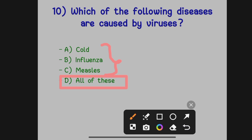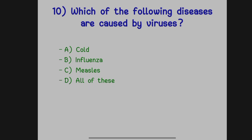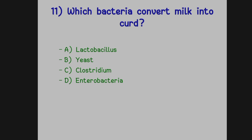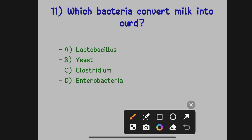The next question: which bacteria convert milk into curd? Option A: Lactobacillus. Option B: Yeast. Option C: Clostridium tetani. Option D: Entero bacteria. The correct answer is Option A, Lactobacillus — this bacteria converts milk into curd.